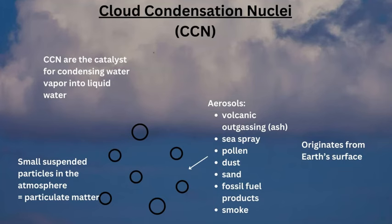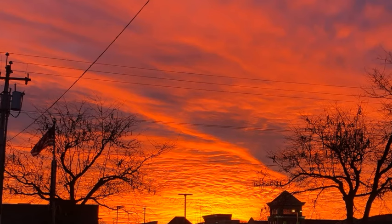Sources of cloud condensation nuclei include aerosols, sea spray, pollen, dust, sand, volcanic emissions with different gases and particles of rock, and also the burning of fossil fuels, which can produce particles of different sizes — both PM2.5 and PM10 based on diameter. All of these particles can play a part in assisting water vapor to condense at the dew point and LCL through that phase change into liquid water, creating the tiny rain droplets that begin the formation and accretion of clouds at different altitudes.